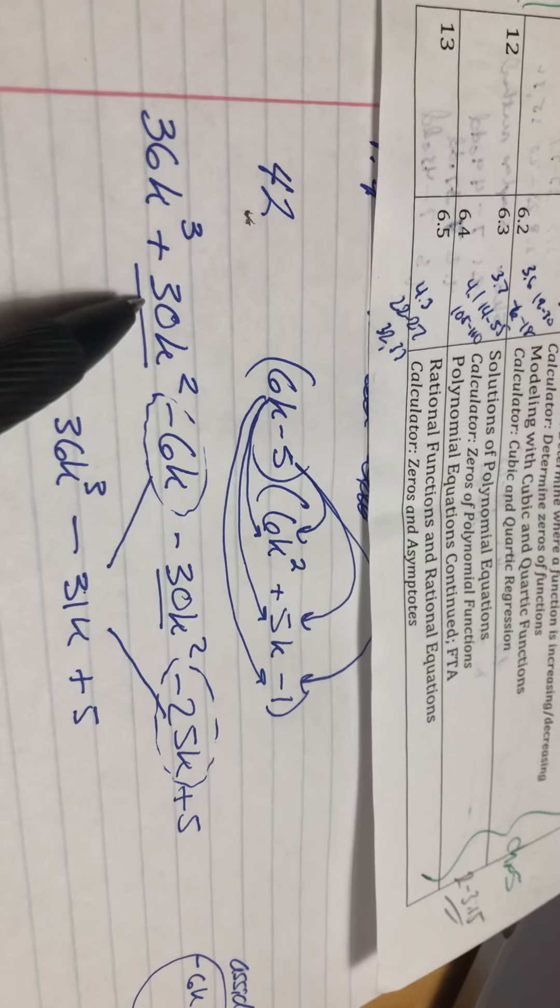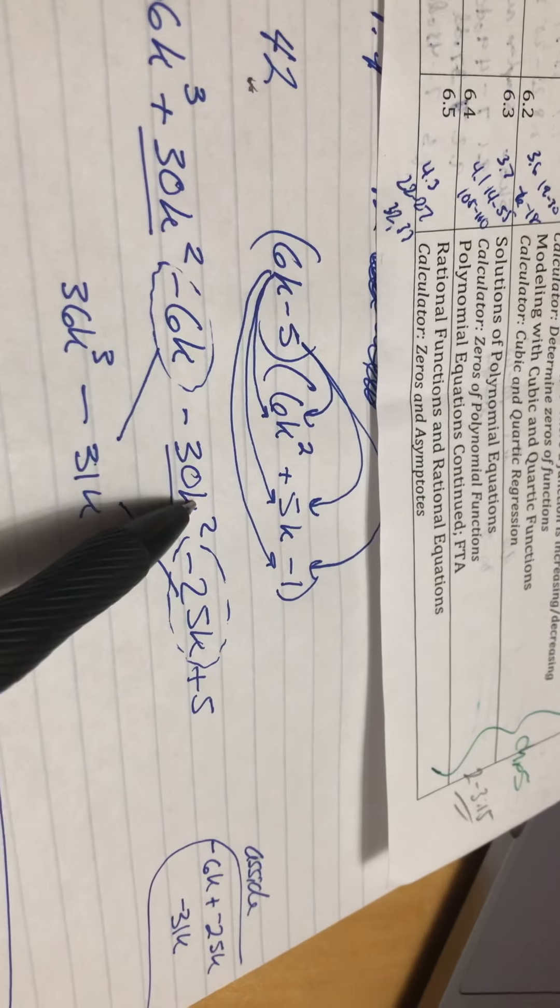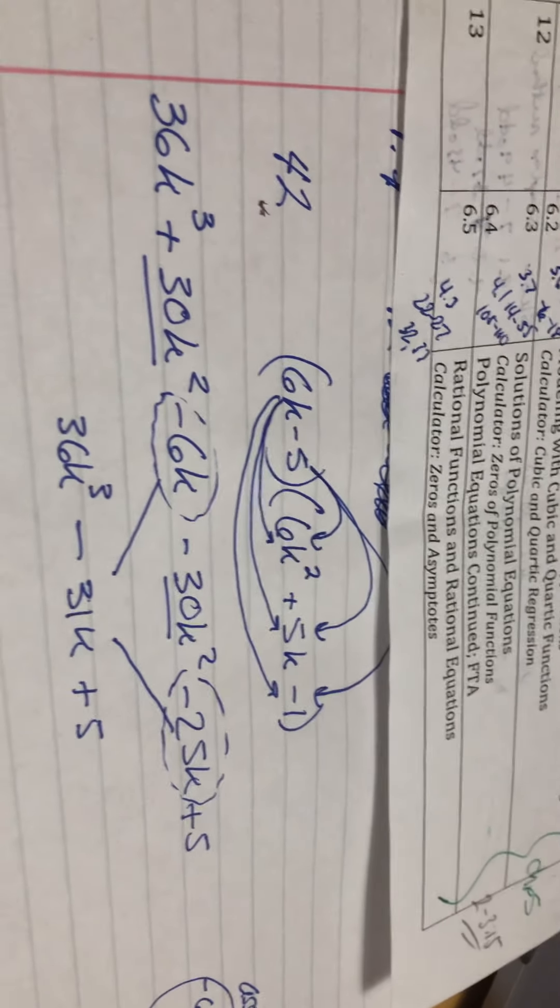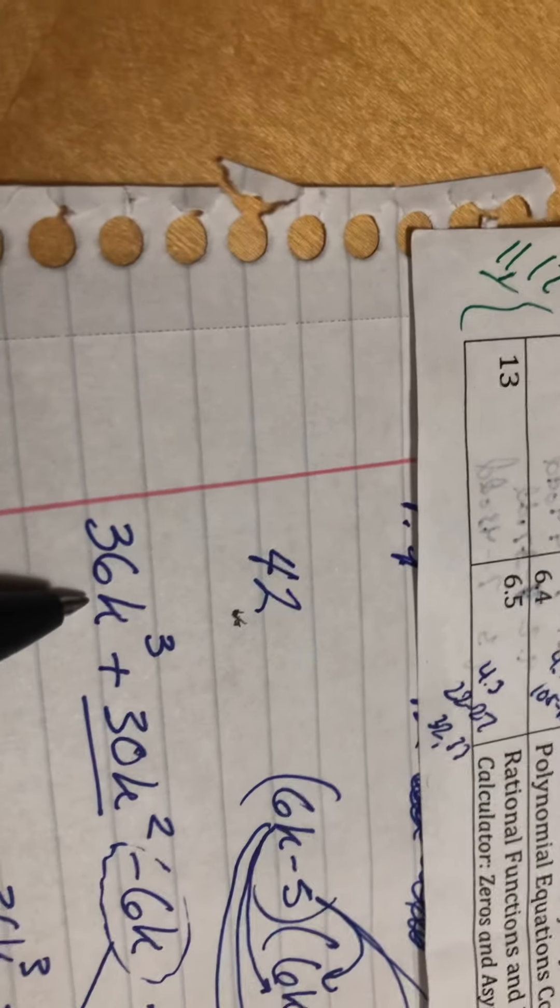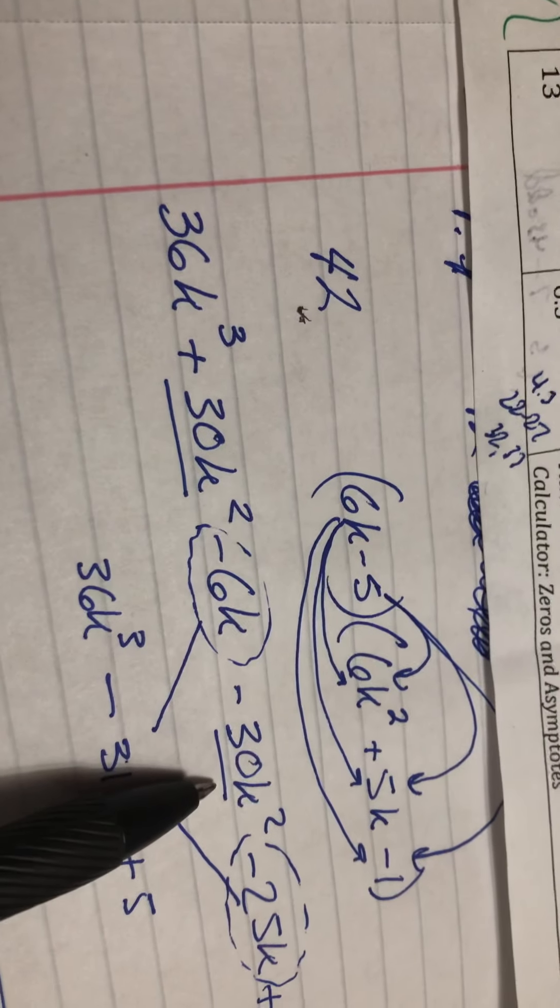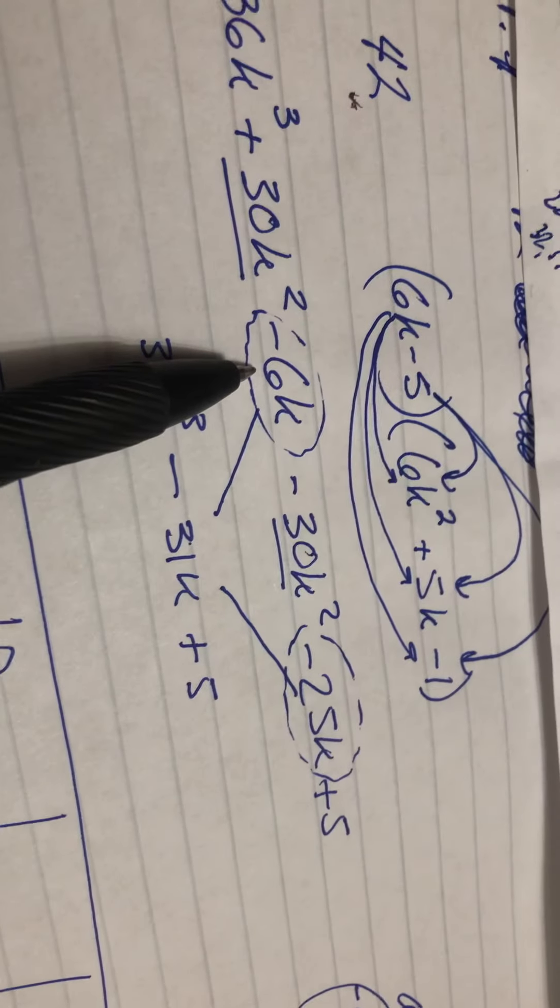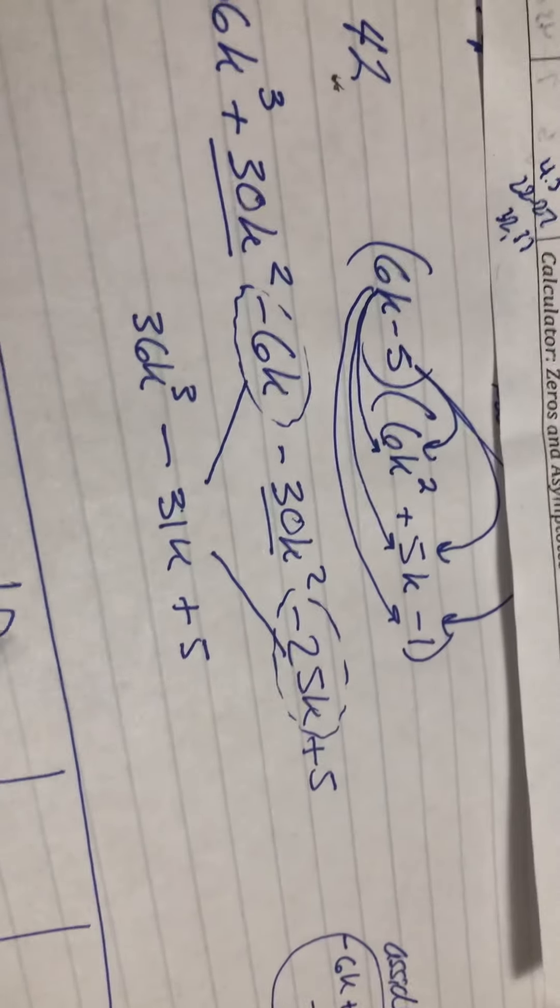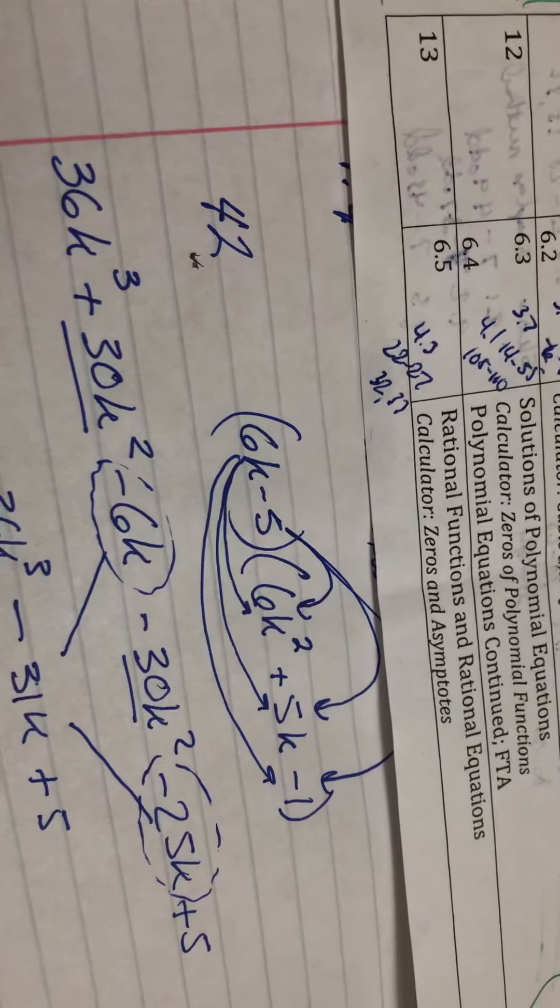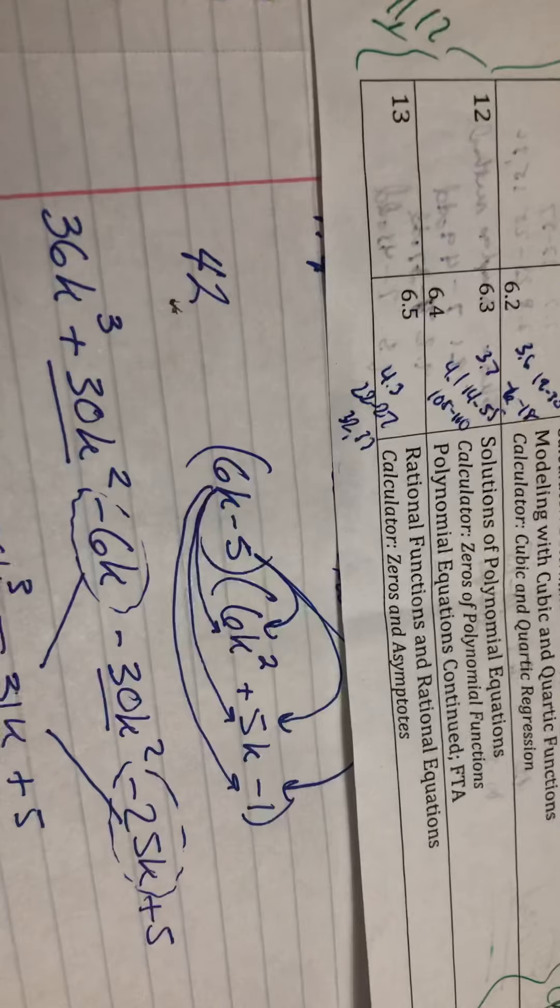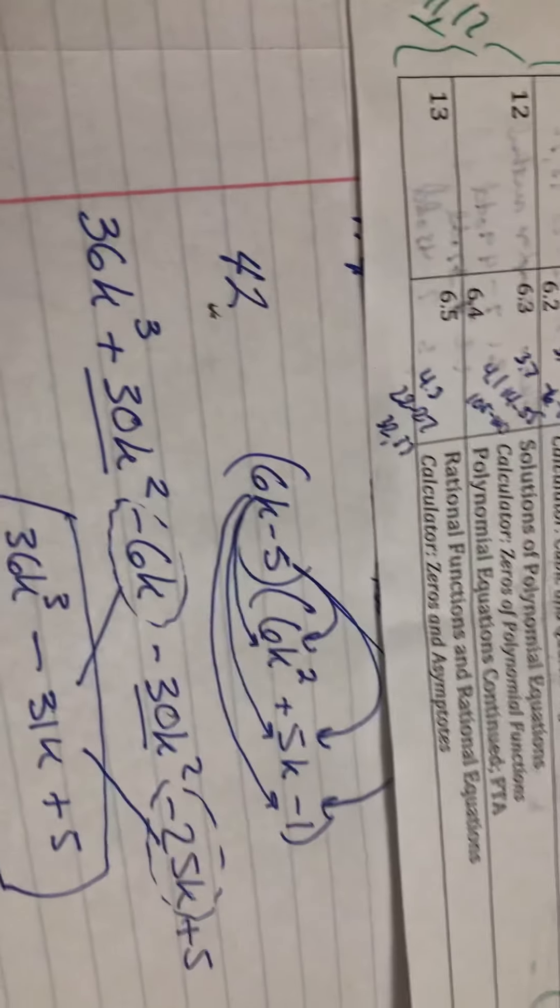Now, if you'll notice the 30k squared is a positive and this 30k squared is a negative and so they eliminate. So what ends up occurring is you have the 36k cubed. It doesn't have a counterpart so it just drops down. These two eliminate each other. Negative 6k and then negative 25k gives us negative 31k and then the 5 pops down. Now you'll notice that all of these terms are not like and so this is as far as we can go.